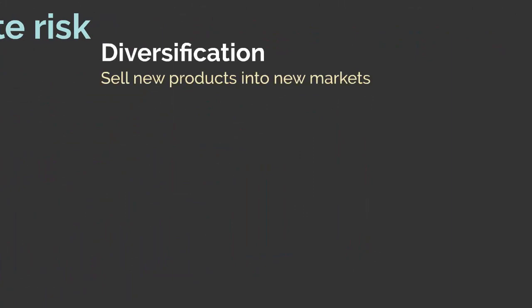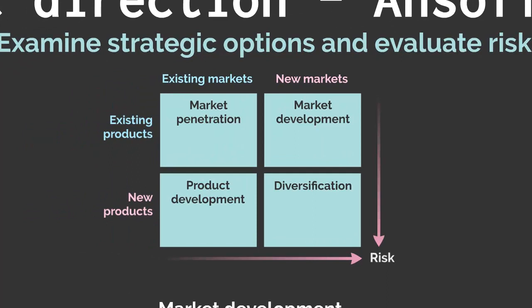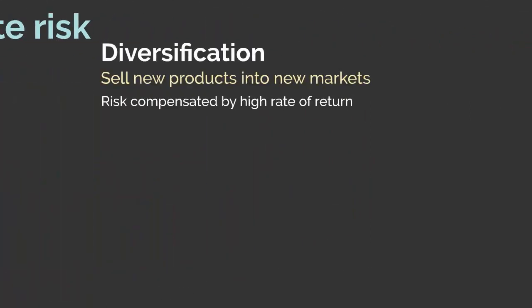Our last quadrant is diversification — developing new products for new markets. Although it's the last of the four growth strategies, it can take multiple forms. It is the riskiest of the four strategies, but this risk can be compensated by a high rate of return. Beyond high returns, another advantage is gaining a foothold in an attractive industry and reducing overall business risk, since the entity is no longer dependent on just one industry.